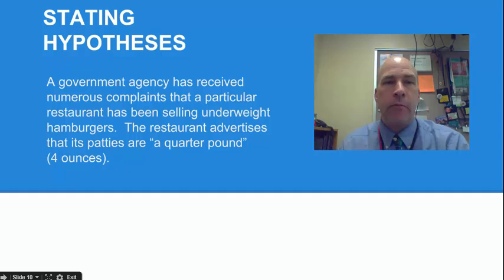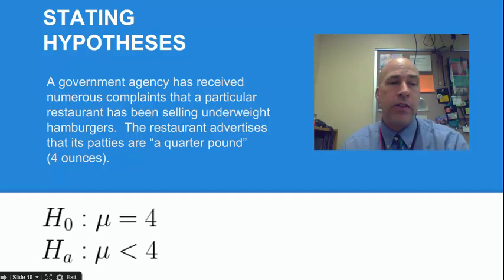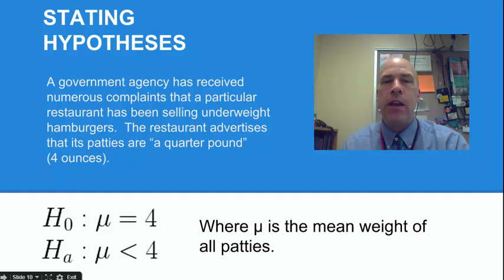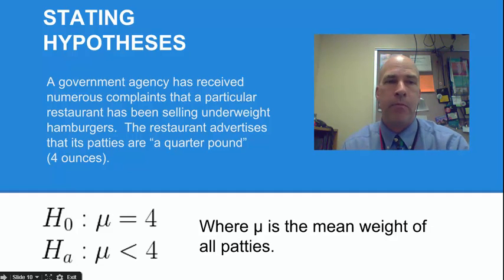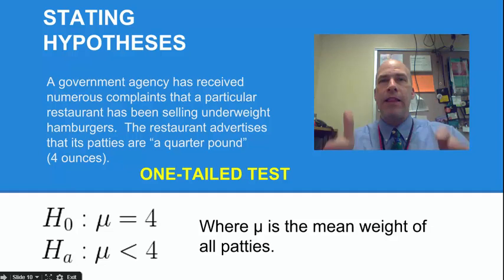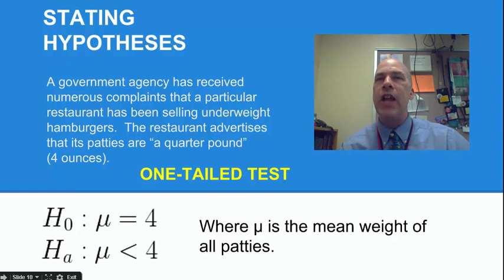Let's take a look at some examples. A government agency has received complaints that Wendy's might be selling underweight hamburgers. The restaurant advertises that its patties are a quarter pound of ground beef. We write the null and alternate hypothesis like this: null hypothesis that the mean equals four, versus the alternate hypothesis that the mean is less than four. Here mu is the mean weight of all patties — the population mean we're trying to prove or disprove. That's called a one-tailed test, because we're only looking in one direction.